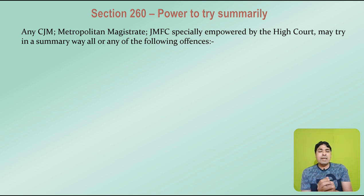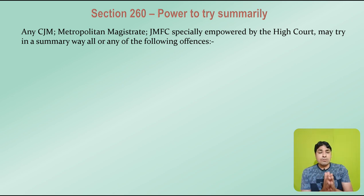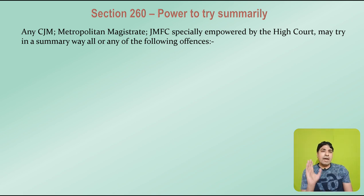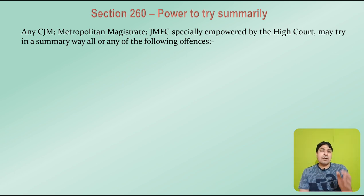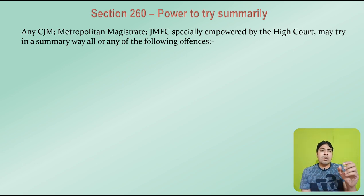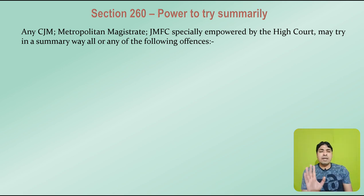In Section 260, the court having power to try any case in a summary manner is mentioned. If the High Court has empowered a Chief Judicial Magistrate, Metropolitan Magistrate, or JMFC, that court only has the power to try any case in a summary manner. It means each and every Judicial Magistrate First Class does not automatically have power to try cases summarily — only those specifically empowered by the High Court can do so.